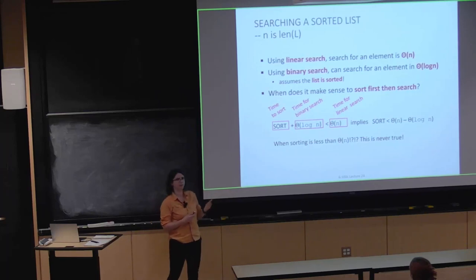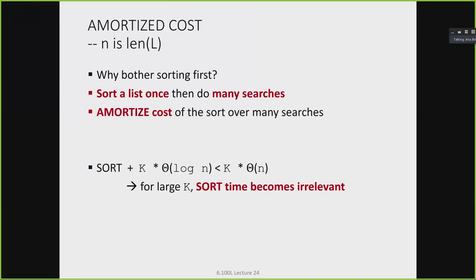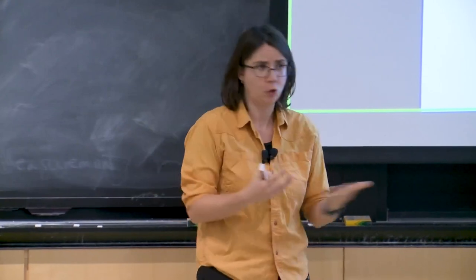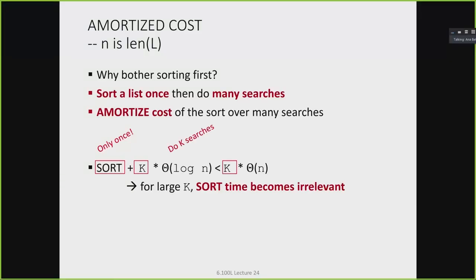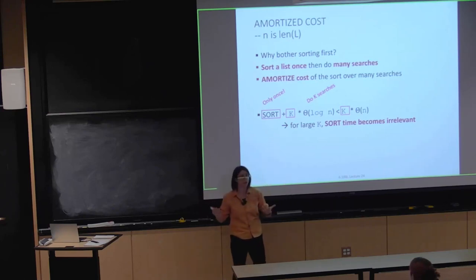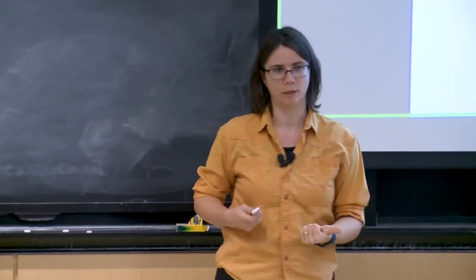So why bother with binary search at all? Often when you download a data set, you're not going to search it just once. You sort the list one time, then do a whole bunch of searches for different things. If we amortize the cost of one sort over k different searches, as k gets really large, it makes sense to use binary search on the sorted list rather than linear search k times. The cost of sorting once gets absorbed as the number of searches grows.